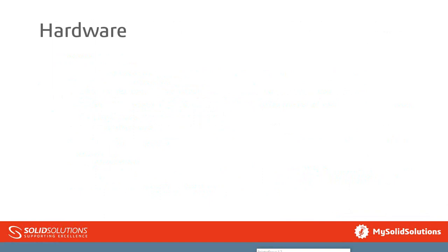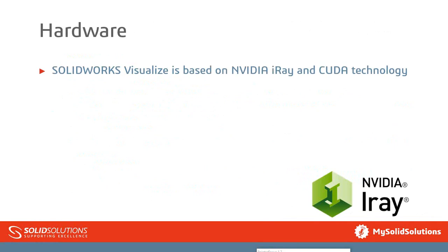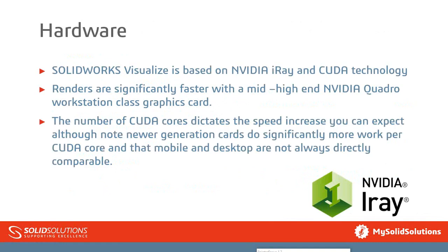Hardware is definitely something to talk about with Visualize. It's using NVIDIA iRay and CUDA technology, so NVIDIA cards are definitely a plus. The majority of renderers use either your CPU or your GPU, but this one can actually use both — though you do have to have an NVIDIA graphics card. They're significantly faster with the high-end NVIDIA Quadro workstations. Go for Quadro rather than GeForce — GeForce are gaming cards, whereas Quadro are your CAD ones. If you're using it on a SOLIDWORKS machine, we definitely recommend a Quadro.